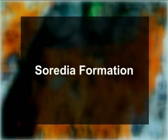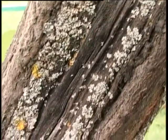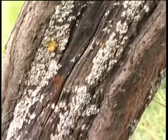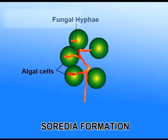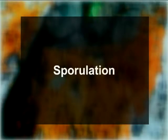Soredia formation: these are small, bud-like outgrowths which develop in the form of grayish-white powder over the upper surface or edges of the lichen thallus. Sometimes they develop in special pustule-like areas called soralia. These are made up of only a few algal cells surrounded by only a few fungal hyphae. Each soredium, after falling on a suitable substratum, germinates into a new lichen thallus — for example, species of Bryoria and Parmelia.